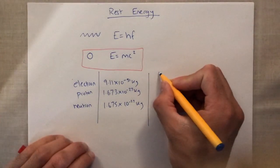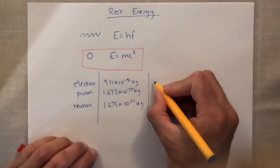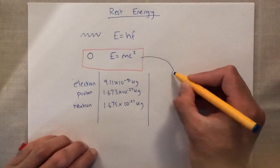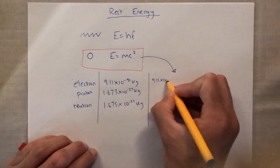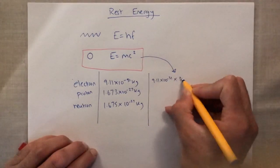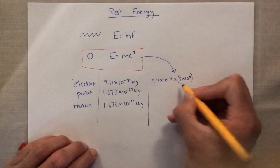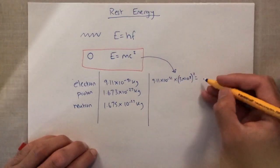So how do we work out the rest energies? Well, all you do is you just times it by the speed of light squared. So 9.11 times by 10 to the minus 31 times by 3 times by 10 to the 8 squared. And you can have a value there.